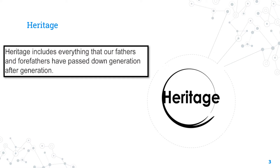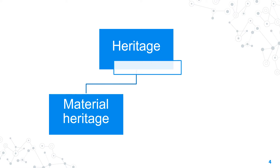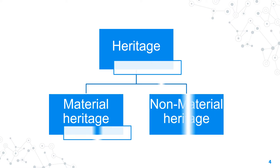Its types include historical, geographical, social, and psychological. Heritage has two main types: material heritage and non-material heritage.